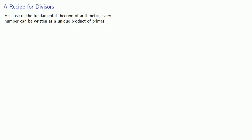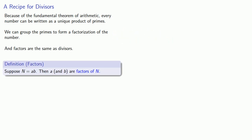Because of the fundamental theorem of arithmetic, we know that every number can be written as a unique product of primes. We can then group the primes to form a factorization of the number. And factors are the same as divisors.